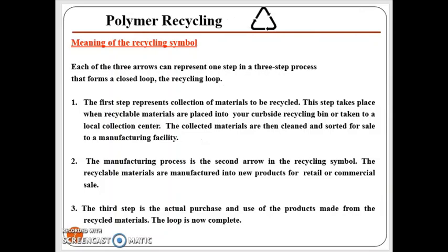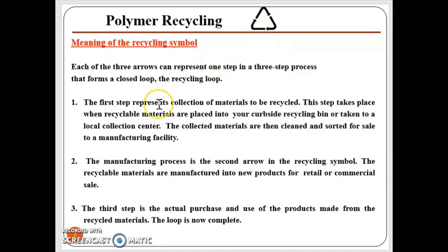Going back to previous slides, you will notice the presence of the three-arrow recycling symbol. These three arrows are related to polymer recycling, and each arrow represents one of the three steps in the recycling loop. The first arrow represents the collection of materials to be recycled — we collect them, separate them, clean them, and sort them for sale to specific manufacturing facilities.